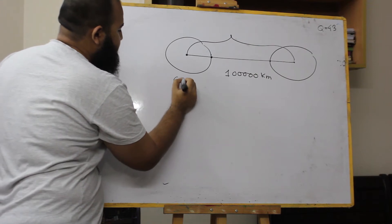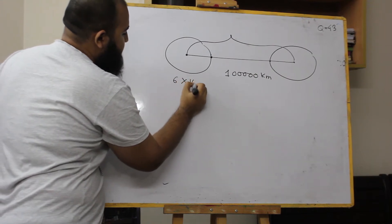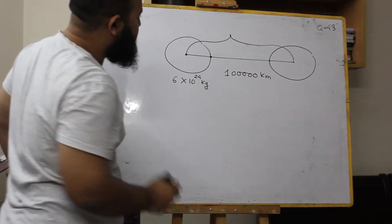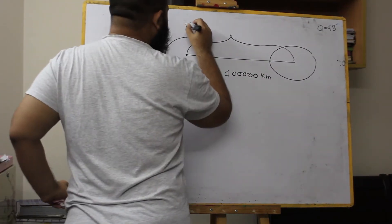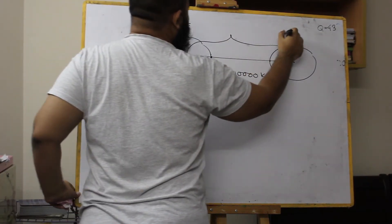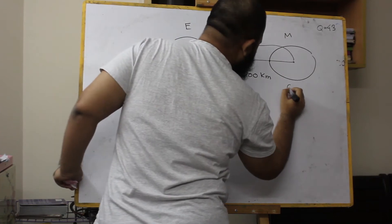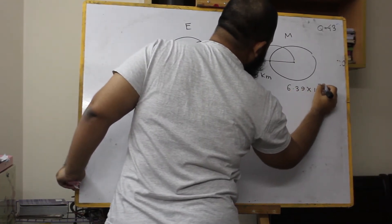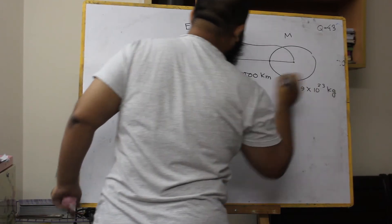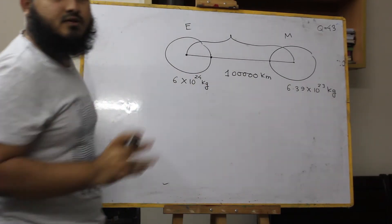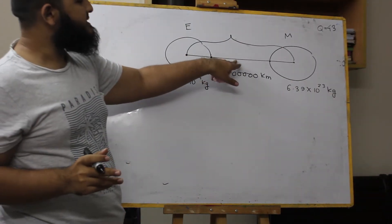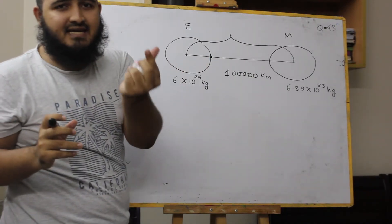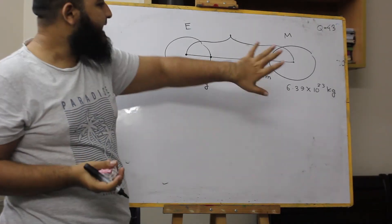The mass is 6 into 10 to the power 24 kg, and the mass of Mars is 6.39 into 10 to the power 23 kg. This is not the mass of the mass. If the main is a mass, then you will start with the mass.